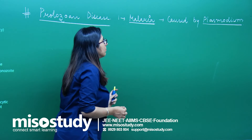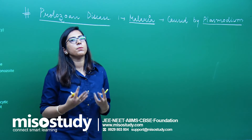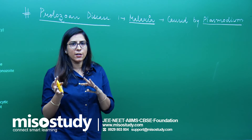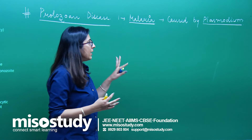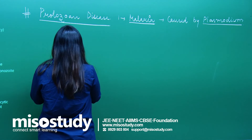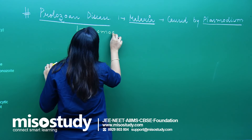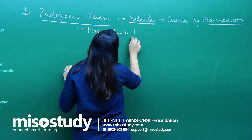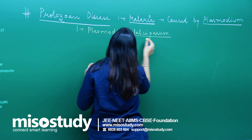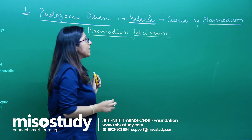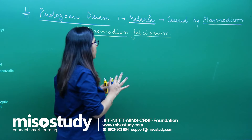This plasmodium which causes malaria — it is not the only species. There are other species also. The different species present are: plasmodium falciparum, plasmodium ovale, and plasmodium malariae. Let us talk about each of these. First, let us talk about plasmodium falciparum. It causes malaria and this is that malaria which is not curable — it is the most deadly form.